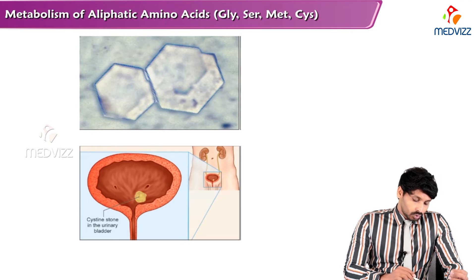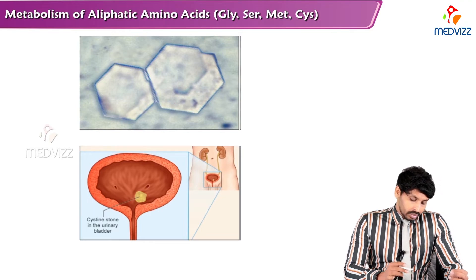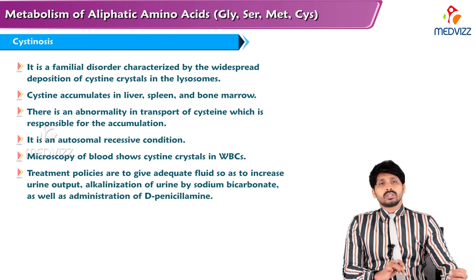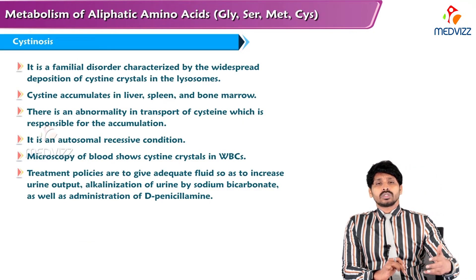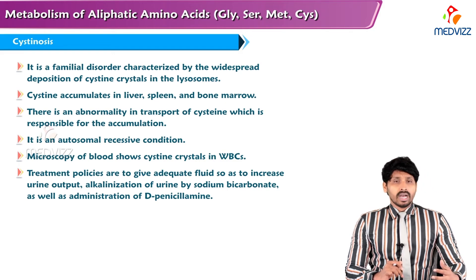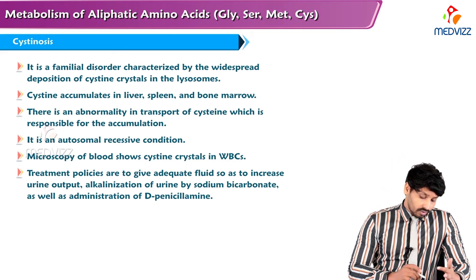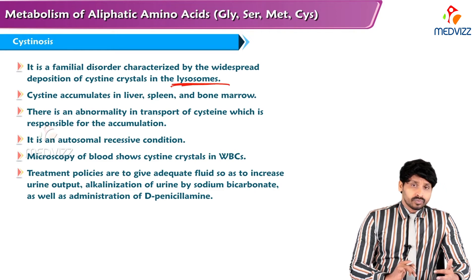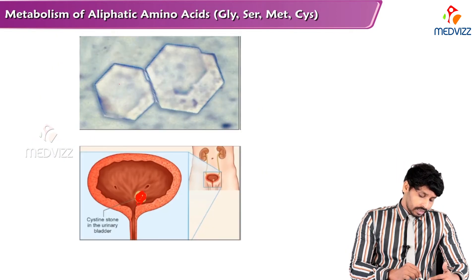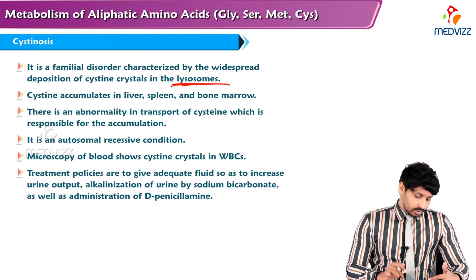To detect cystinuria, the cyanide-nitroprusside test is a screening test: the free sulfhydryl group reacts with nitroprusside. Urine is made alkaline with ammonium hydroxide, sodium cyanide is added, and if cystine is present it is reduced to cysteine. The difference: cystine has no free sulfhydryl group, but cysteine has a free sulfhydryl group. Sodium nitroprusside gives a red color complex. Confirmation is by chromatography.